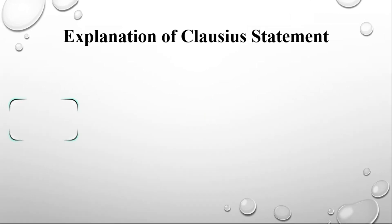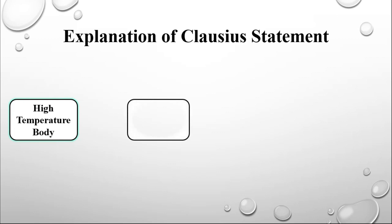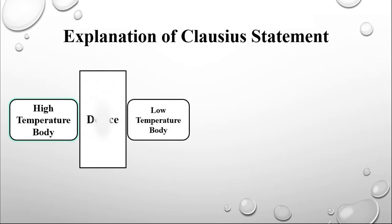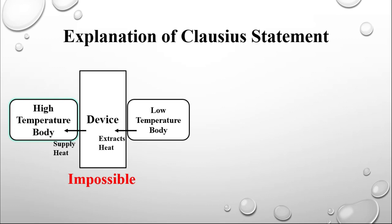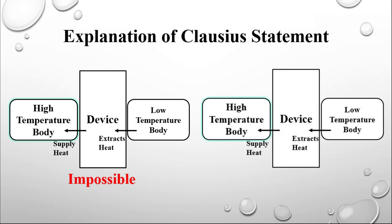The Clausius statement gives us an idea that if there is a high temperature body and a low temperature body, and we have constructed a device such that it extracts heat from the low temperature body and supplies it to the high temperature body, that is impossible. Whereas if the same arrangement has an external input — that is, work given to it — then it becomes possible.